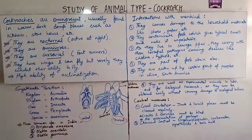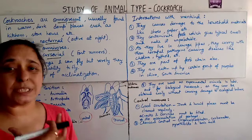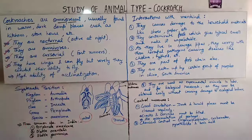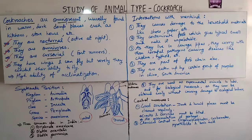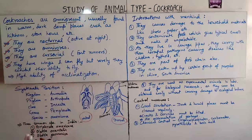Cockroaches have wings and can fly, but they rarely use this ability. Here I have drawn the ventral view and the dorsal view of the cockroach. The next character is that the cockroach has a high ability of acclimatization — the process by which an organism can adjust to a gradual change in the environment. This is a special characteristic of the cockroach.